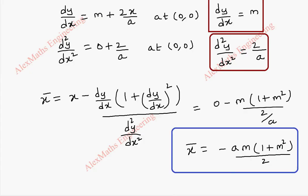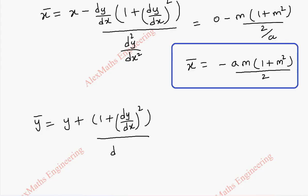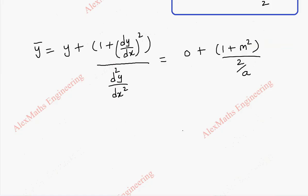Now for ȳ, the formula is ȳ equal to y plus (1 plus (dy/dx)²) divided by d²y/dx squared. So this is 0 plus (1 plus m²) divided by 2/a. So the value of ȳ is a(1 plus m²) divided by 2.